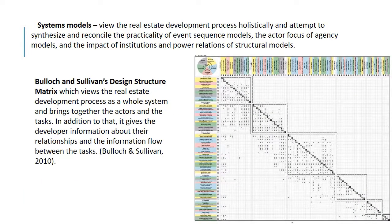Finally, we come to systems models, which view the real estate development process holistically and attempt to synthesize the practicality of event sequence models, the actor focus of agency models, and the impact of institutions and power relations of structural models. Systems models bring all previous methods together to give a holistic idea. Bullock and Sullivan's design structure matrix views the real estate development process as a whole system, bringing together actors and tasks, and giving the developer information about their relationships and the information flow between tasks.